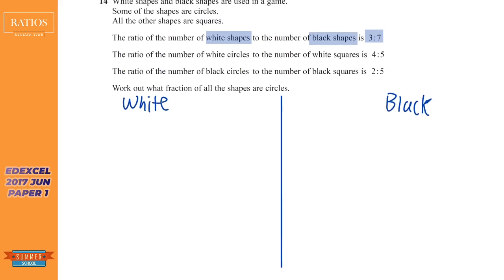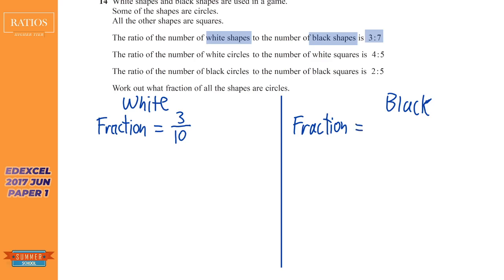The ratio of white shapes to black shapes is three to seven. The important thing to know is you can get a fraction from a ratio. The fraction that are white: put the white parts — three — over the total parts. Don't put it over seven; there are ten parts altogether (three plus seven). So the fraction of white is three over ten, and the fraction of black is seven over ten. Now for the white side: white circles to white squares is four to five.